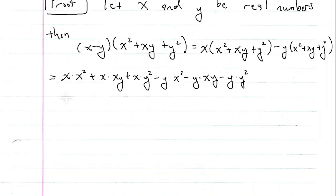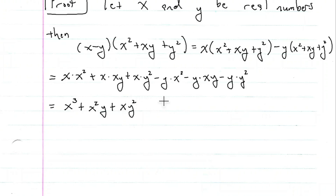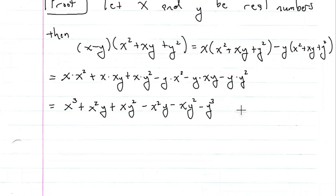Now, x times x squared is going to be x cubed. x times xy will be plus x squared y. And then x times y squared is just xy squared. For the other side, using the commutative property, we have minus x squared y, then minus xy squared, and finally y times y squared is minus y cubed.